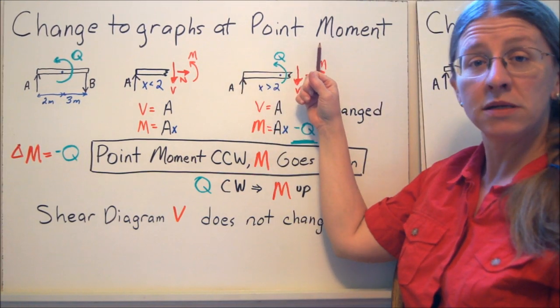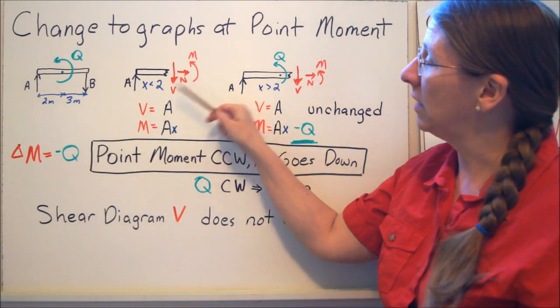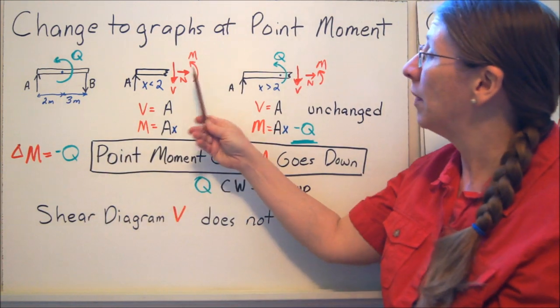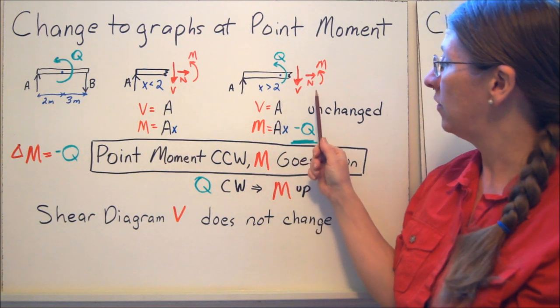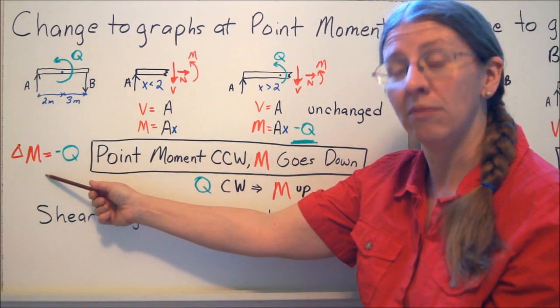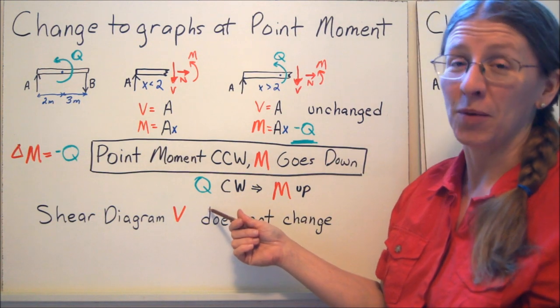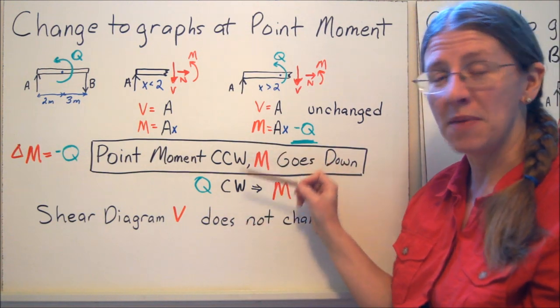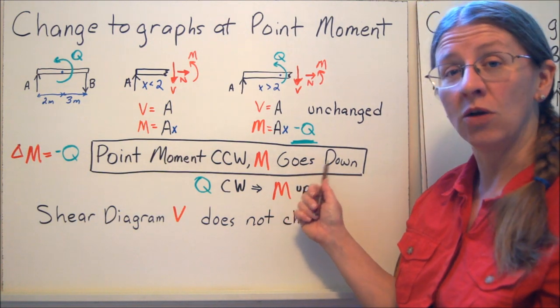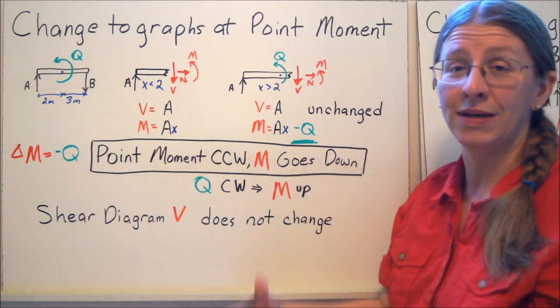What happens to your graphs with a point moment? Same thing. A little bit of a beam, a little bit cut right before it, a little cut right after it. Here I get V equals A, M equals AX, whatever A is. There could be other parts of A on the left-hand side, I don't really care. But what's going on here is that as I get right past here, if you take the sum of the moments on this little slice of a beam, you have M equals AX minus Q. So the change in M has been minus Q. The point moment counterclockwise, M goes down. Point moment clockwise, M goes up. And to help you remember this, the mnemonic is that counterclockwise, that's a sort of a negative connotation if you're doing something counterculture. Your M is going to go down. Your shear diagram does not change here. So a point moment affects the moment diagram, a point shear affects the shear diagram.